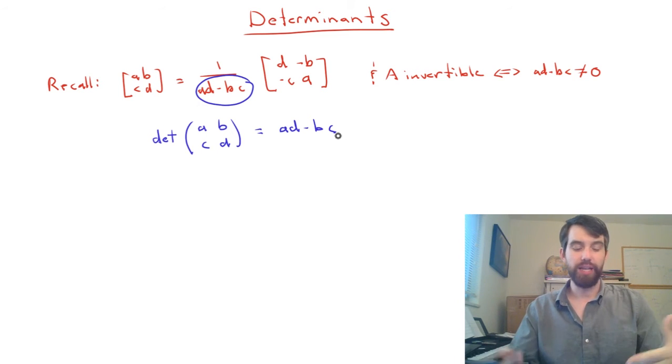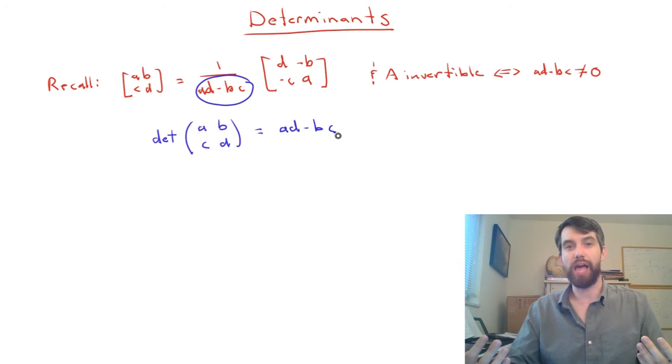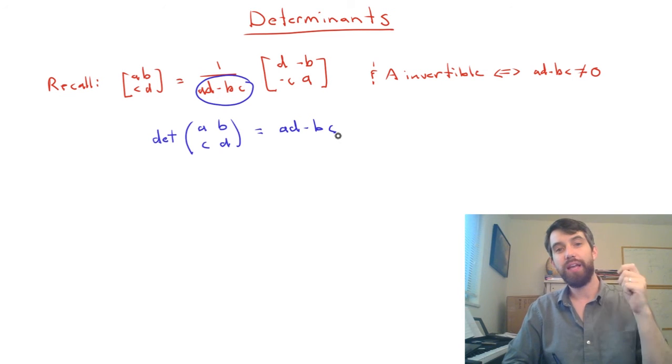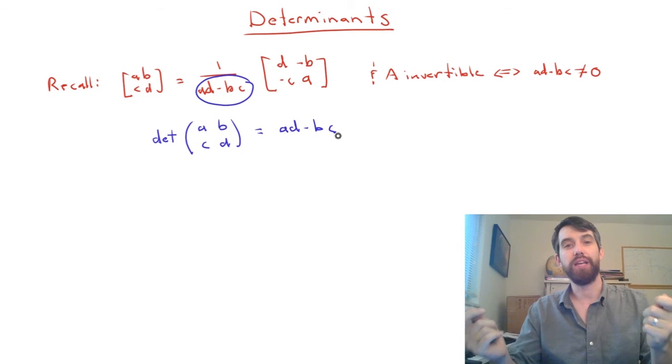Now the question is, is this a sort of weird artifact of the 2x2 case or does it generalize to the nxn case? And it turns out that yes, it does indeed generalize. We're going to be computing this determinant, we'll figure out how to do that in this video, and then we'll get that A is invertible precisely if the determinant is non-zero.